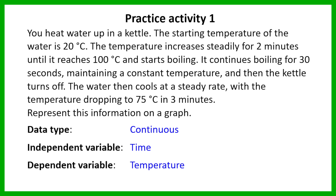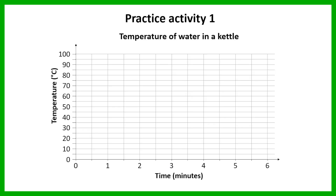So let's go through that quickly. The first thing you had to do was set up your axes. You should have had your time on the horizontal axis and your temperature on the vertical axis. Time is measured in minutes, temperature is measured in degrees Celsius, and you needed to have your values shown on the axes. You also need to make sure that you have a suitable title — I called mine 'Temperature of water in a kettle.'